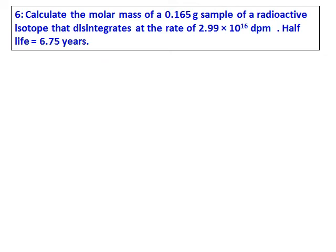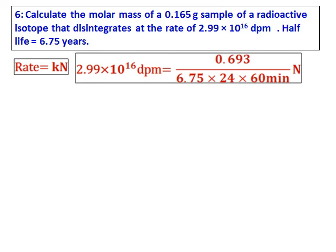Calculate the molar mass of a 0.165 gram sample of a radioactive isotope that disintegrates at the rate of 2.99 times 10 to the power 16 dpm. Half-life is 6.75 years. The equation we will be using is rate equals kN, and the rate is given as 2.99 times 10 to the power 16.